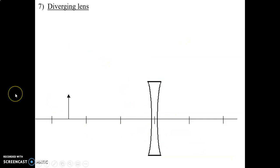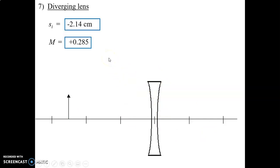Let's go on to problem seven, our diverging lens. How do we know it's a diverging lens? It says so, but also there are some other clues. It tells us we have a negative focal length — negative focal lengths are only for diverging devices. Also, we see the shape of the lens is concave — it's thinner in the middle than it is on the edges. The math should give SI as negative 2.14 centimeters, magnification of positive 0.285. We should be expecting upright, reduced, and virtual: negative image distance means upright and virtual; magnification less than 1 means reduced.